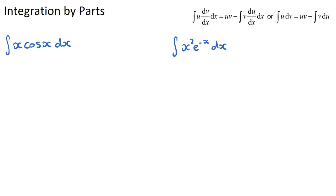In this video we're going to look at integration by parts, a key concept that appears in most IB Math exams. We use integration by parts when we have an integral with two terms containing x's being multiplied or divided. It looks similar to integration by substitution, but in substitution questions we normally have a term and its derivative in the integral. Here the terms are completely separate — for example, x and cos x — so we need integration by parts.